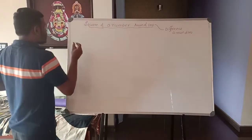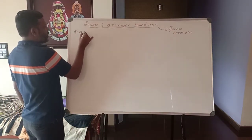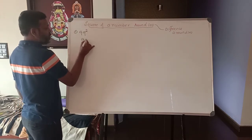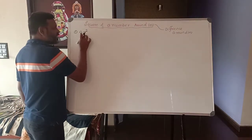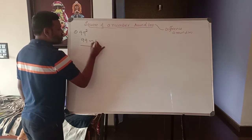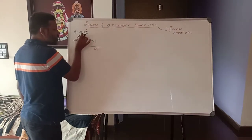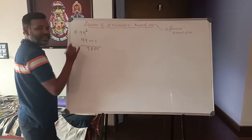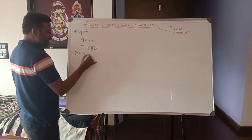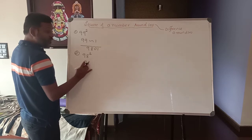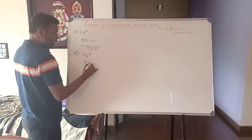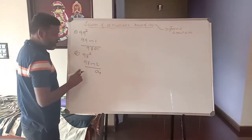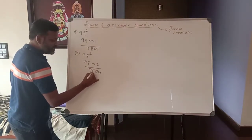So, for example, 99 squared. This 99 is around 100, very close to 100. What is the difference of 99 and 100? It is 1. Now, 1 squared is 01 — since it is 2 digits, write 01. Then 99 minus 1 is 98. So the answer is 9801.